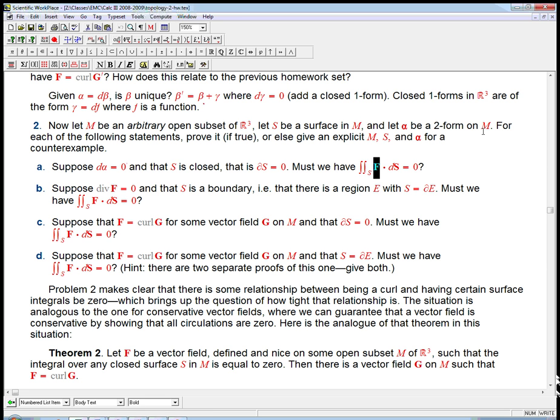So if the form is closed and the surface is closed, must we have the integral of alpha equals zero? And the answer, of course, is no, and the analog of this is, we talked about this already, that we just take the gravity vector field and we turn it into a two-form in the standard way.